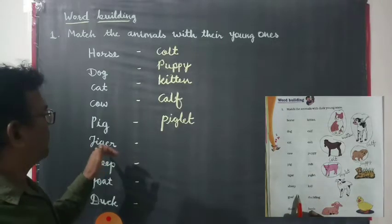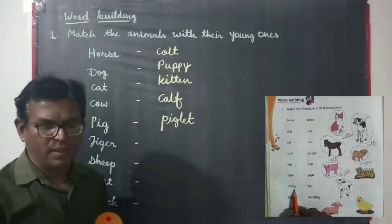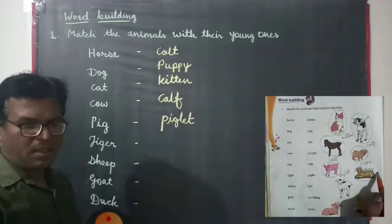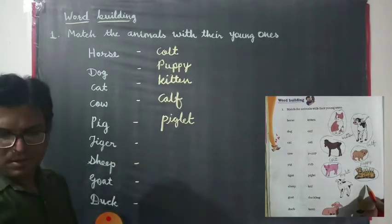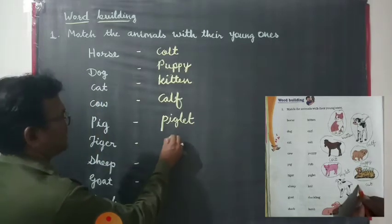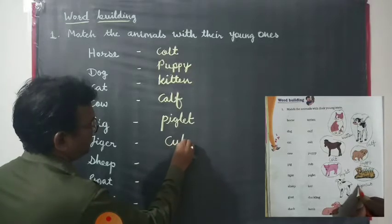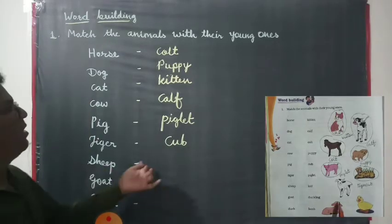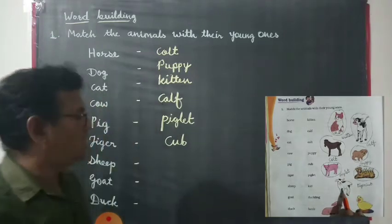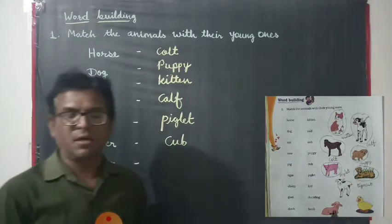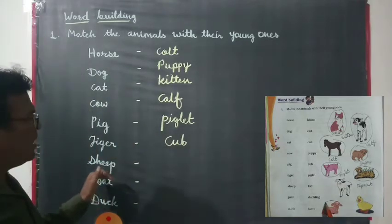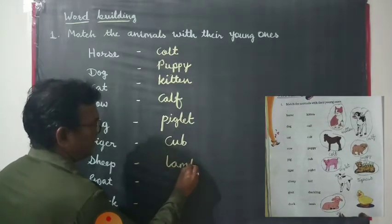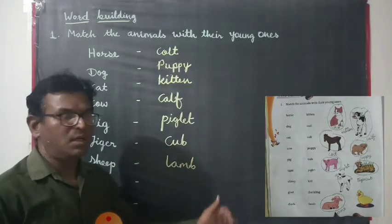Now, find out the young words of tiger. Yes, this is the young one of tiger, that is called a cub. Now we find out the young ones of sheep. Yes, the young ones of sheep — what is called the young ones of sheep? That is called a lamb — L-A-M-B. The young ones of sheep is called lamb.